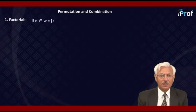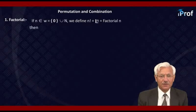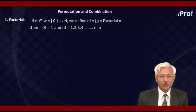Let n be any whole number. That is, either it is zero or it is any natural number. However, n factorial is defined as the product of 1, 2, 3, 4, up to n, where n belongs to natural numbers.